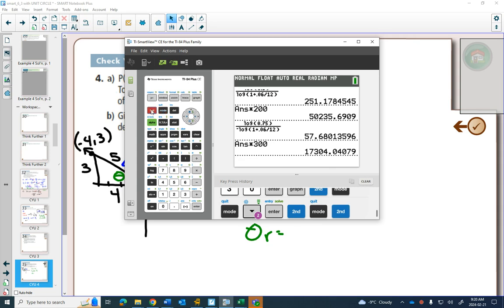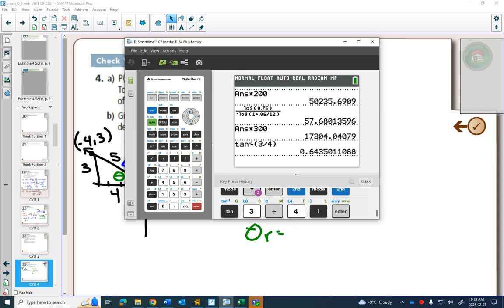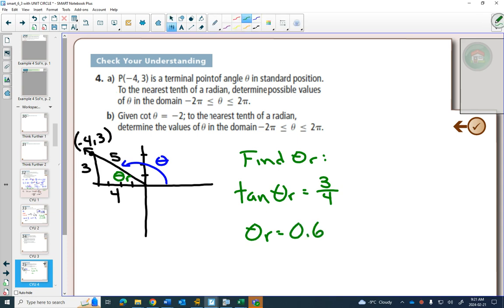Now when I go tan inverse, so 3 divided by 4, 0.6435. And you will get an error if your final answer isn't rounded correctly. And one of the ways that you can make a mistake in rounding is if you round early in the question and then round later on again. So I put the dot dot dot there to show I'm going to just keep all of those values until later.